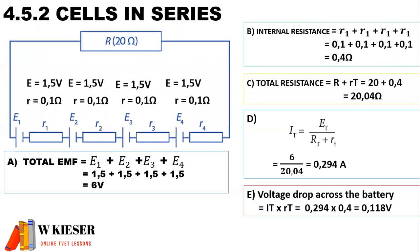To calculate the volt drop across the battery — the original voltage of the battery is 6 volts and we want to determine how much the voltage will drop when the circuit is closed. The supply current through the battery is 0.294 amps and the sum of the internal resistance is 0.4 ohms. Therefore, the volt drop across the battery is 0.118 volts.